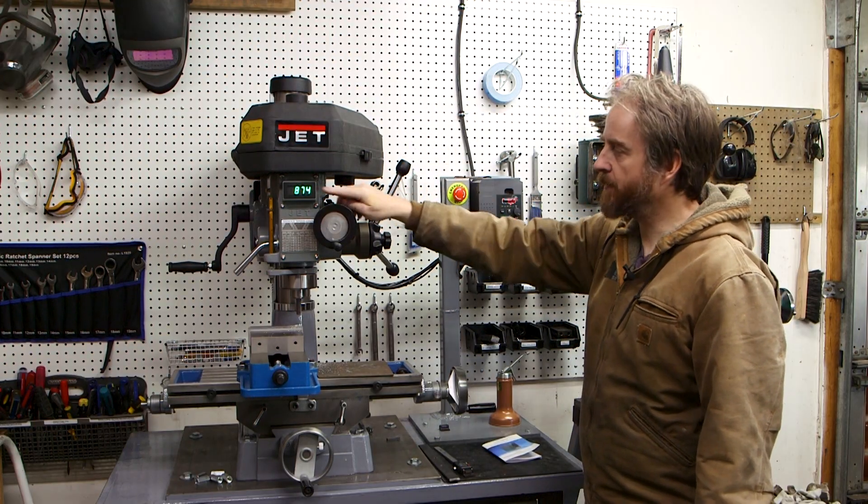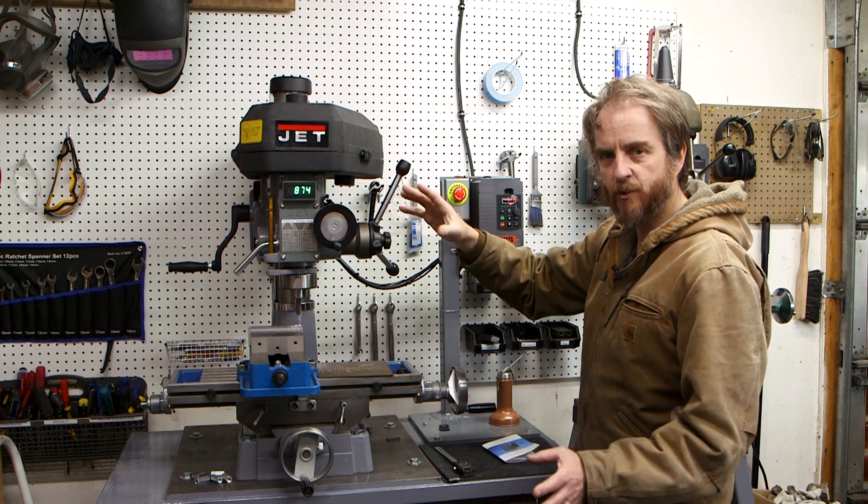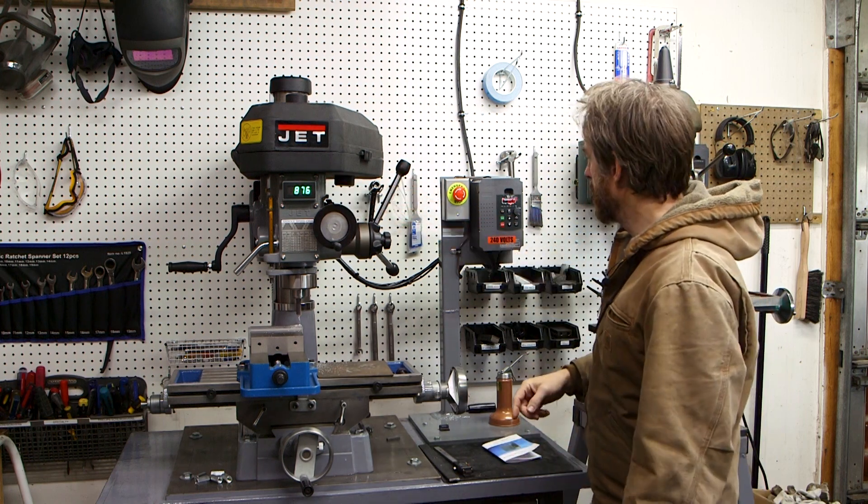I am still using the stepped pulleys for my motor. So it's set up in whatever position to give me a max RPM of 874. I kept the stepped pulleys because I want to be able to adjust this. Give me different torques, different speeds, that sort of thing.